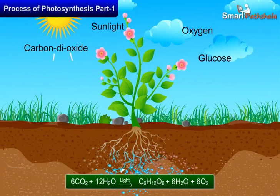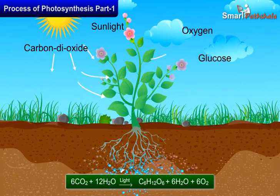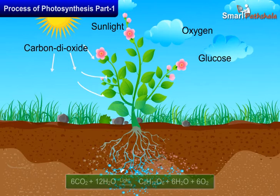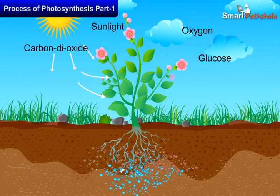During photosynthesis, chlorophyll-containing cells of leaves in the presence of sunlight use carbon dioxide and water to synthesize carbohydrates. The process can be represented as an equation. During this process, oxygen is released.